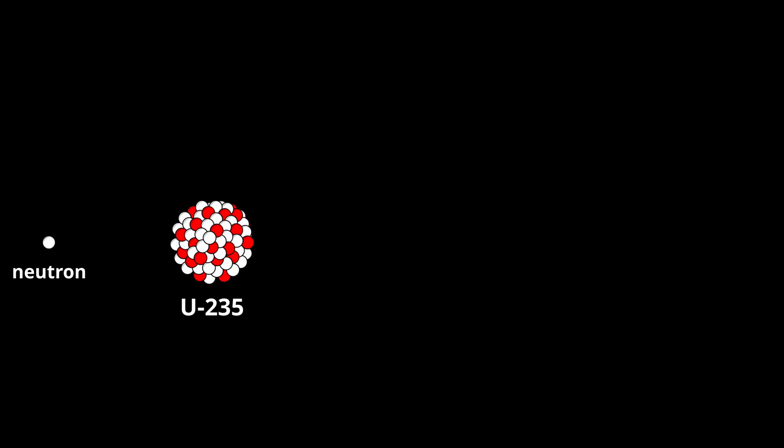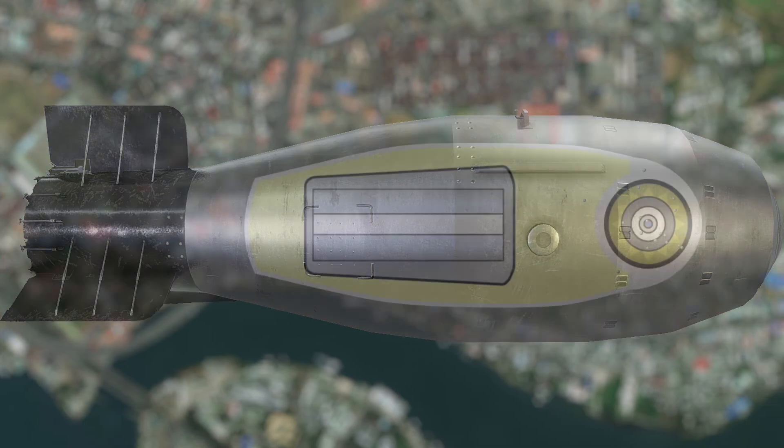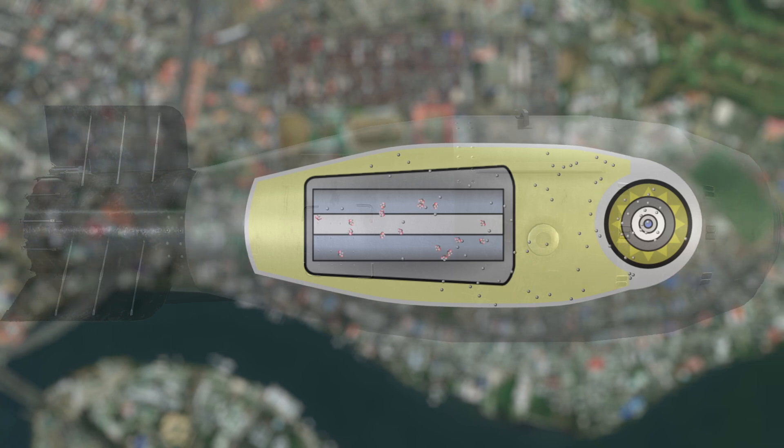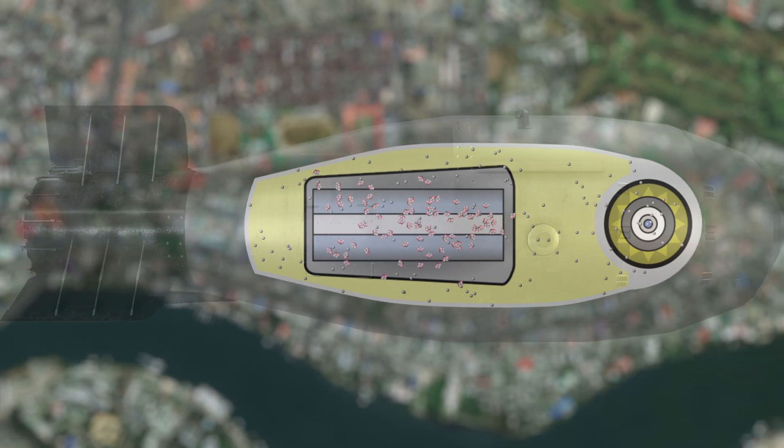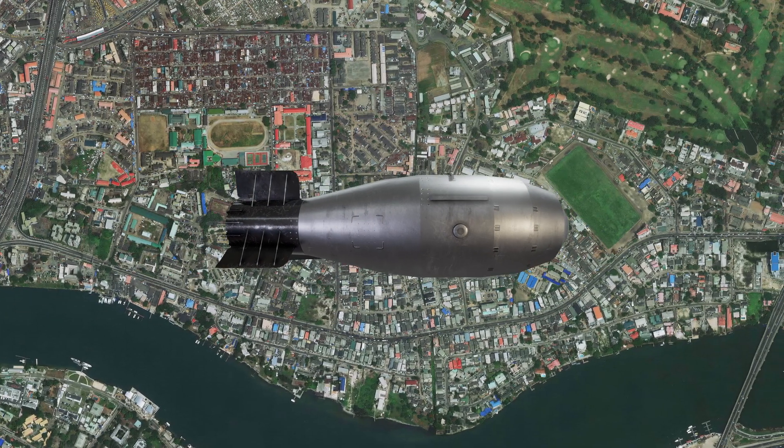Fission breaks up atoms and in that process releases energy, while fusion combines smaller atoms into bigger ones. A hydrogen bomb combines hydrogen atoms to form helium atoms, and in this process a tremendous amount of energy is released.